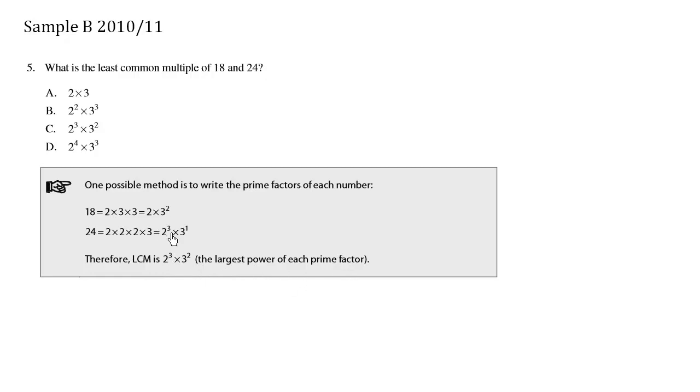So when we look at all the base twos, the one with the highest exponent is 2 to the 3, so we say 2 to the 3 times. And then we look at all the base threes, these are prime factors, and we choose the one with the largest power, which is 3 squared.